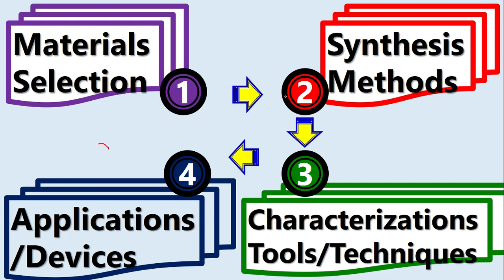I will explain in the coming slides. The second step and the third step are basically supporting the first and fourth steps. When students start their study, they are basically stuck — how can I start my study, which material do I have to choose, and why do I have to choose this material? The most important question is: how will I know which material is best and what application I should use that material for?